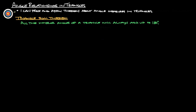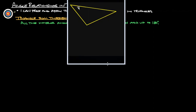Next, we have the triangle sum theorem, which states that all the interior angles of a triangle will always add up to 180 degrees. I have something I want to show you that will hopefully help this make better sense. Here we have just a regular old triangle — probably a scalene triangle here.